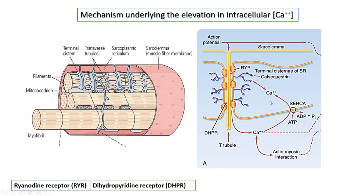ATP hydrolysis provides the energy because the concentration of calcium ions in the sarcoplasmic reticulum is already higher than in the cytosol, so transport against this concentration gradient requires energy. The calcium entering the sarcoplasmic reticulum may be sequestered by calsequestrin — if free calcium ions remain high in the sarcoplasm, more calcium cannot be stored. When bound to calsequestrin, the free calcium ion concentration is reduced, allowing more calcium to be stored in the sarcoplasmic reticulum.